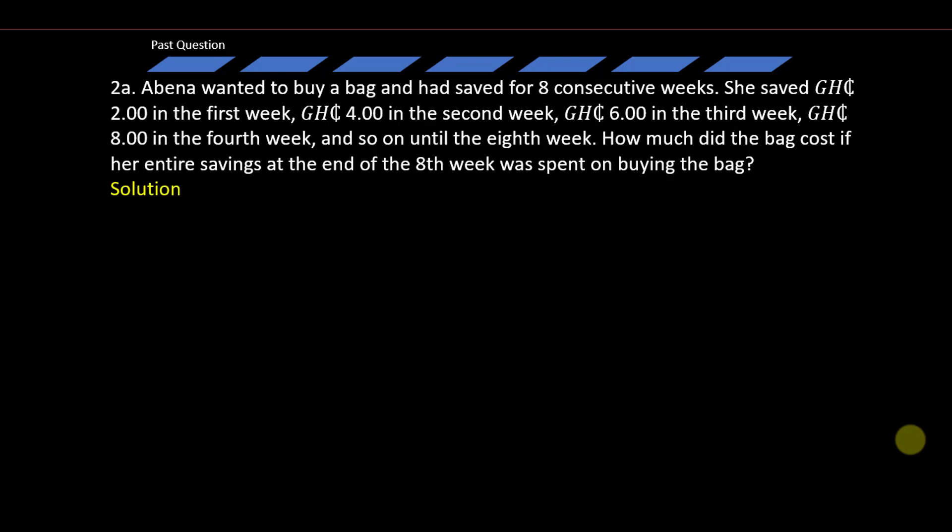Solution: Before we say anything, you get to realize that on the first week she saved 2 Ghana cedis, second week 4 Ghana cedis, third week 6 Ghana cedis. Is there a way we can generate a rule for the contribution in each week? Observe carefully - the sequence appears in a definite manner. We have 2, 4, 6, 8. Of course someone might say it is multiples of 2 or better still, even numbers.